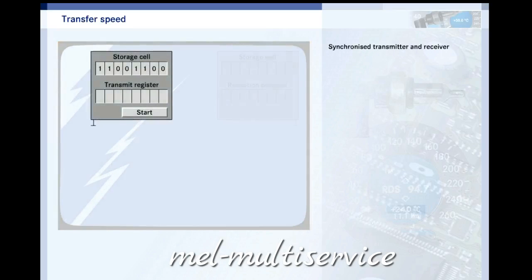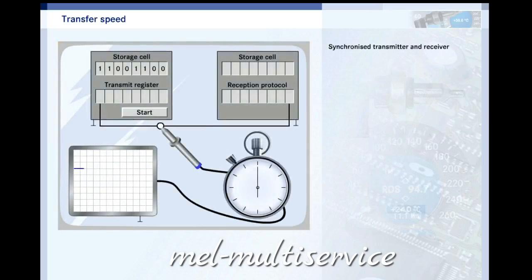The transmitter and the receiver must be synchronized. Therefore they must agree on the data transfer speed. This is defined by the number of bits transferred per second. Without this agreement, the receiver would assign incorrect values to the binary positions. The unit, bits per second, is also known as baud.